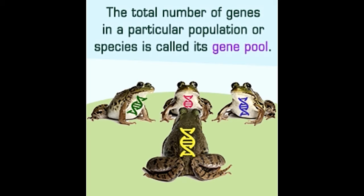A species is a way of describing organisms of the same kind who can breed among themselves. Therefore, dogs, humans, and horses belong to different species. However, all individuals of a species do not occur in a single region — they live as groups in different geographical areas. These groups are called populations. Thus, every species is made up of a number of populations.